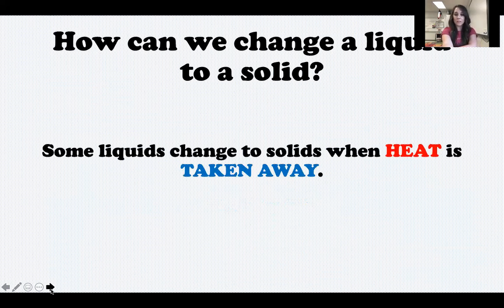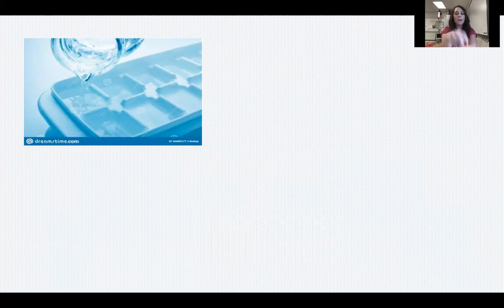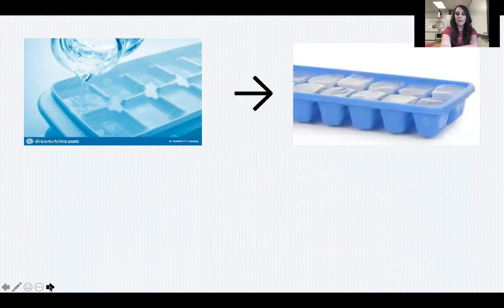Some liquids change to solids when heat is taken away - you're removing the heat. This is called freezing. We're not adding cold; we are removing the heat, and that causes some liquids to freeze and become solids. Here's an example: if you have an ice cube tray, you take it, pour water in it which is a liquid, put it in the freezer for a few hours, and then you have ice cubes which are a solid. That's called freezing.